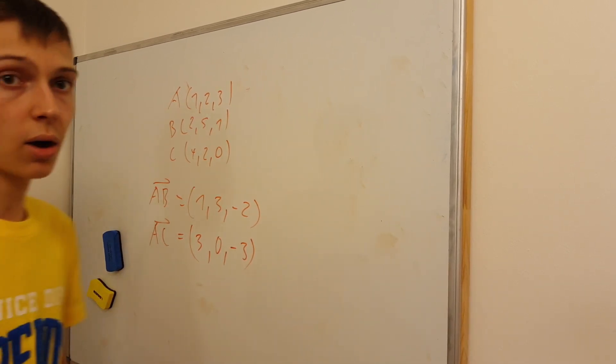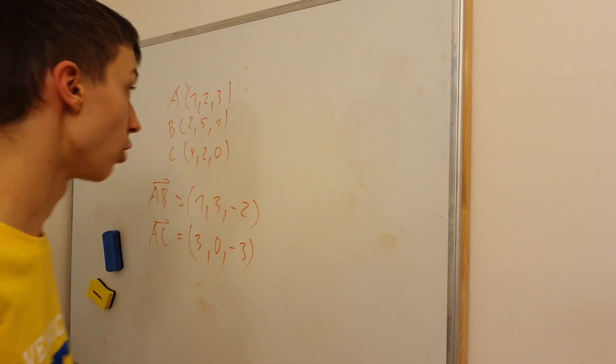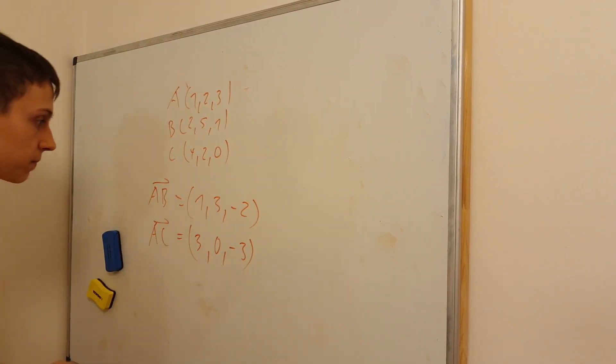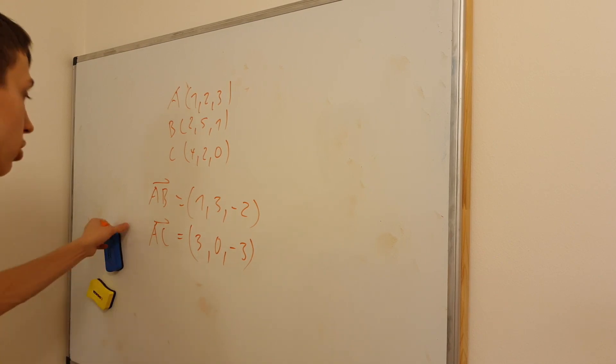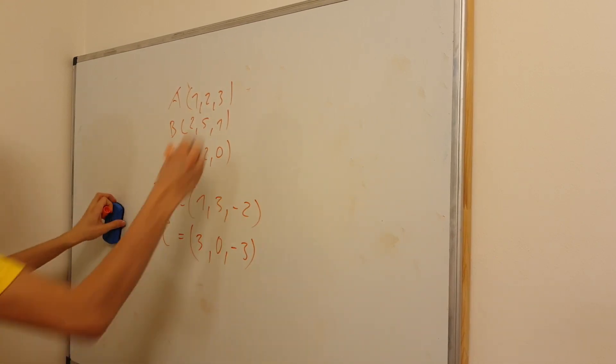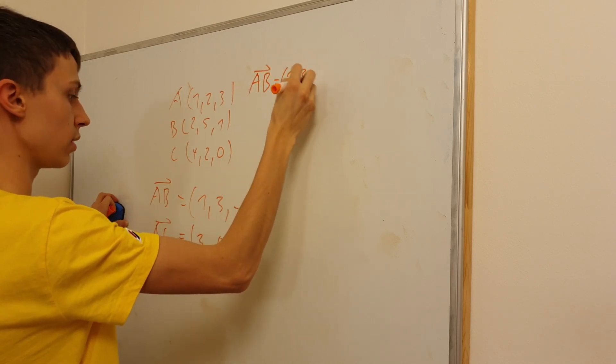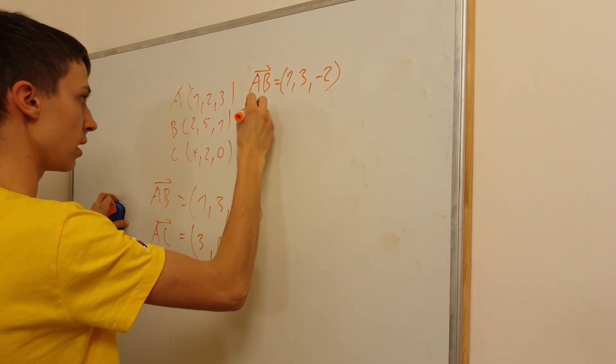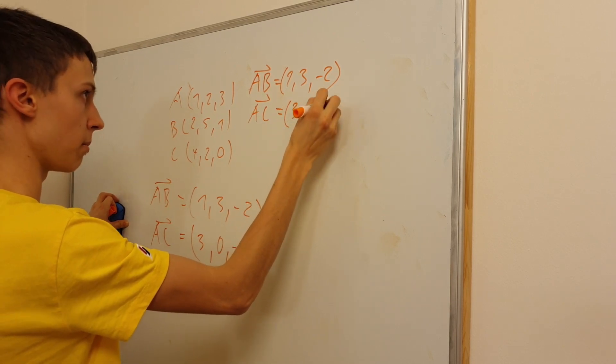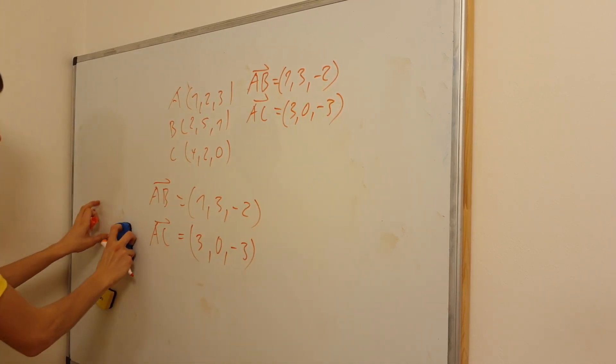And of course, now we need to get the normal, to get the perpendicular vector to both of these, to write out the equation of the plane. I'll just rewrite these two vectors right here so that we don't lose track: 1, 3, minus 2, and AC is 3, 0, minus 3.